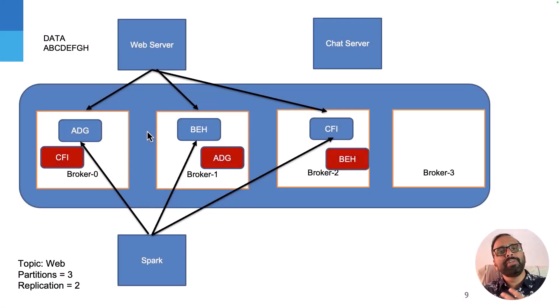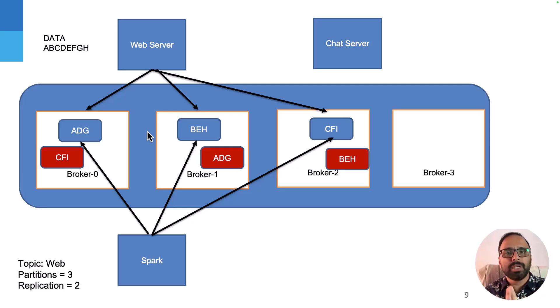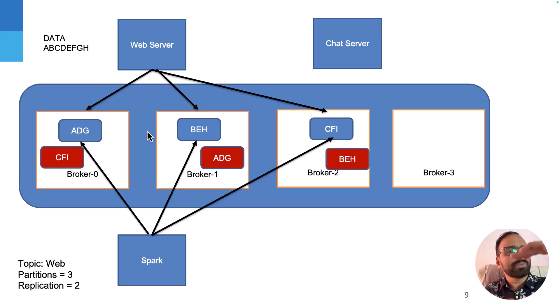In case you have not subscribed to our channel, please consider doing so. Now, so far we understood about topics. I want you to pay attention to this diagram — don't worry if you feel confused, I'm going to explain it step by step. This diagram is very important to understand the internals of Kafka. We have four brokers, two producers, and one consumer.